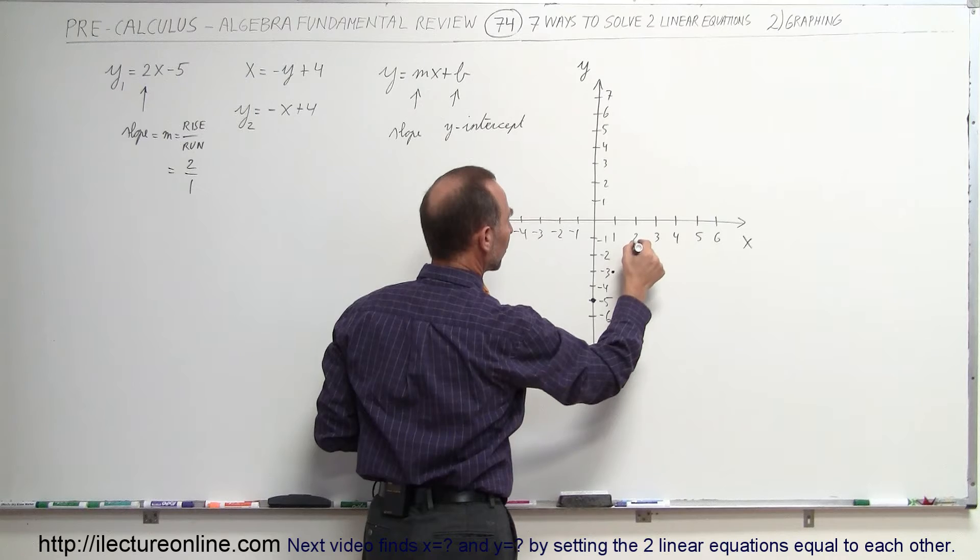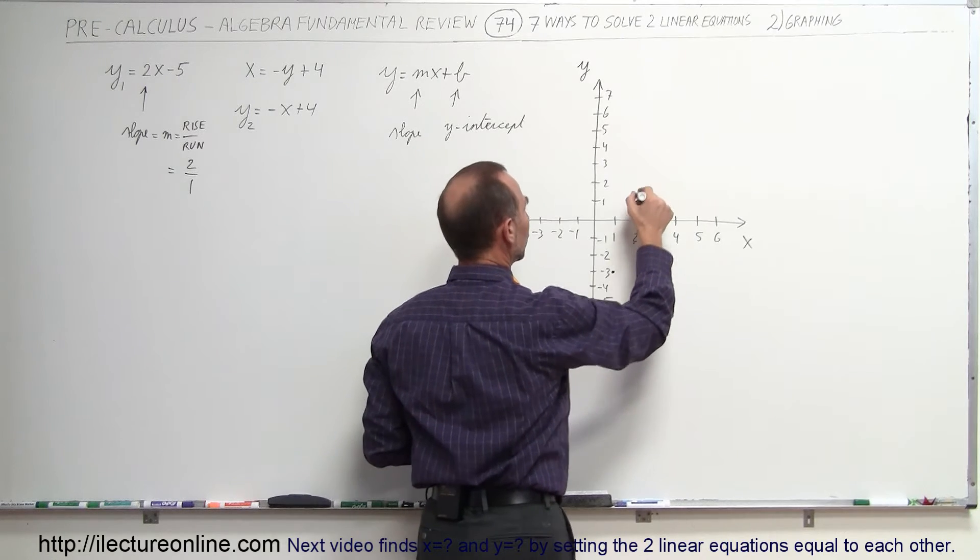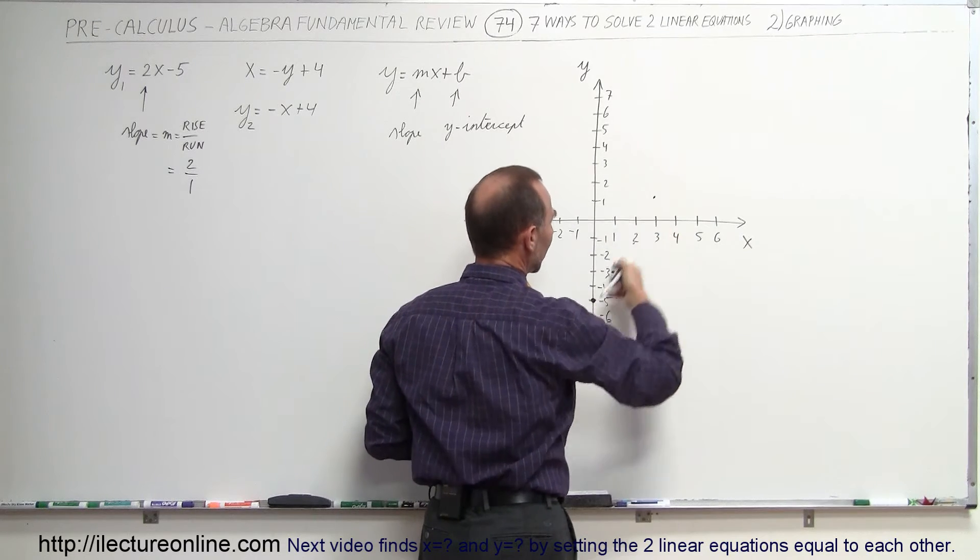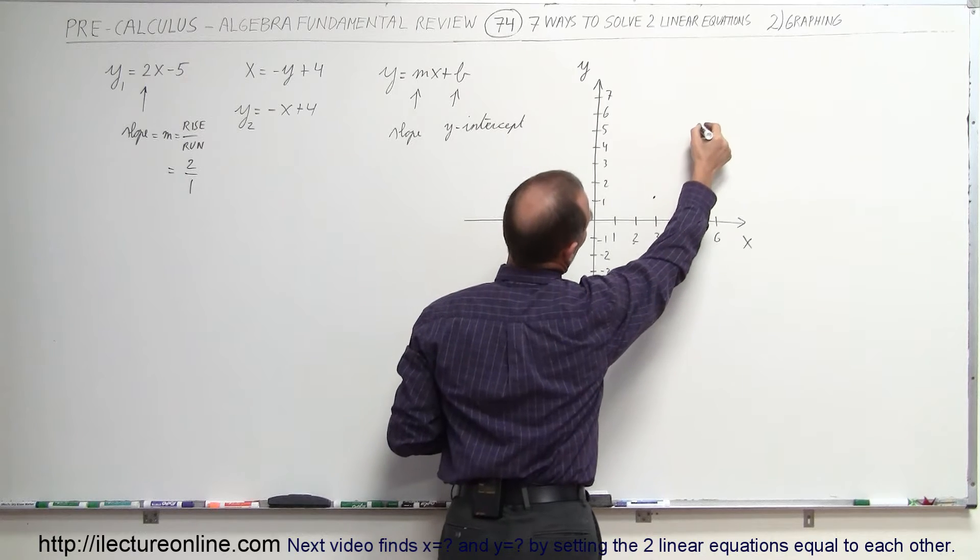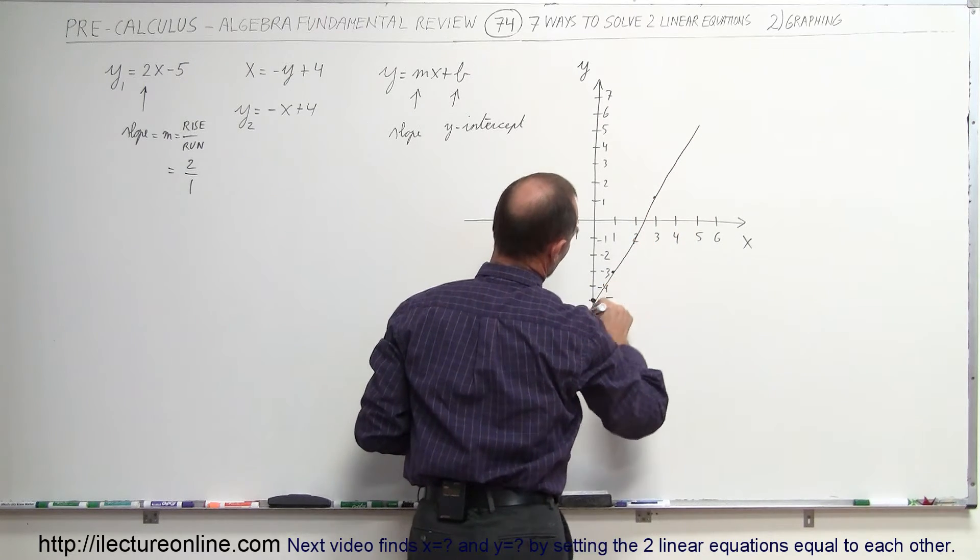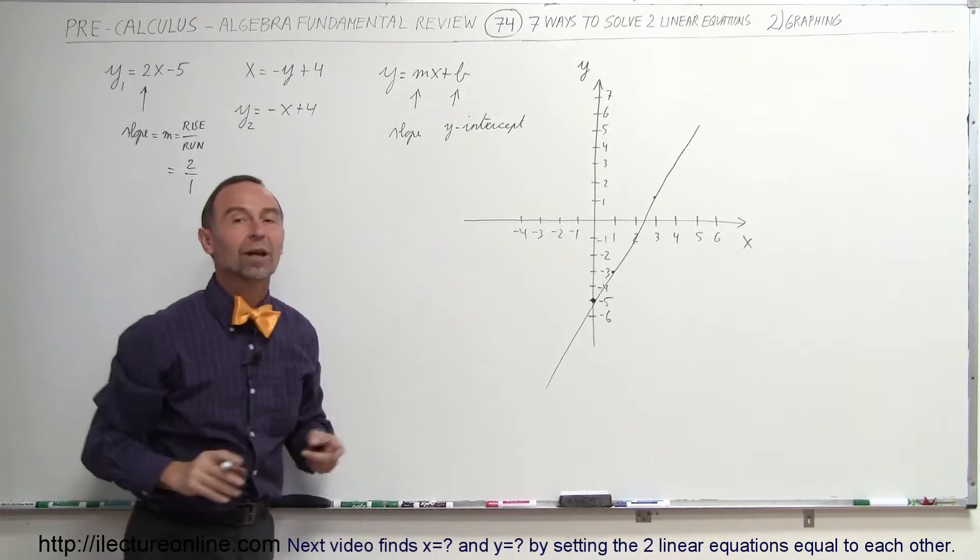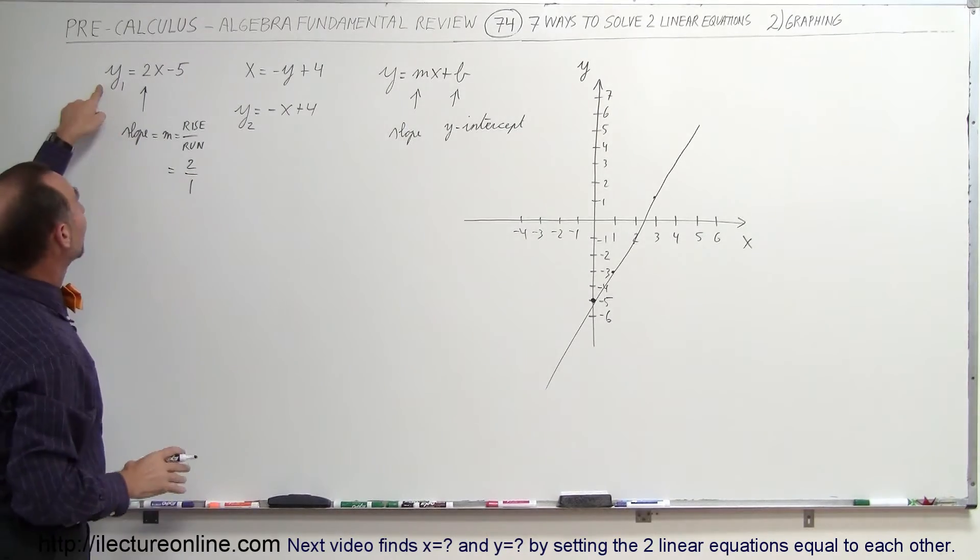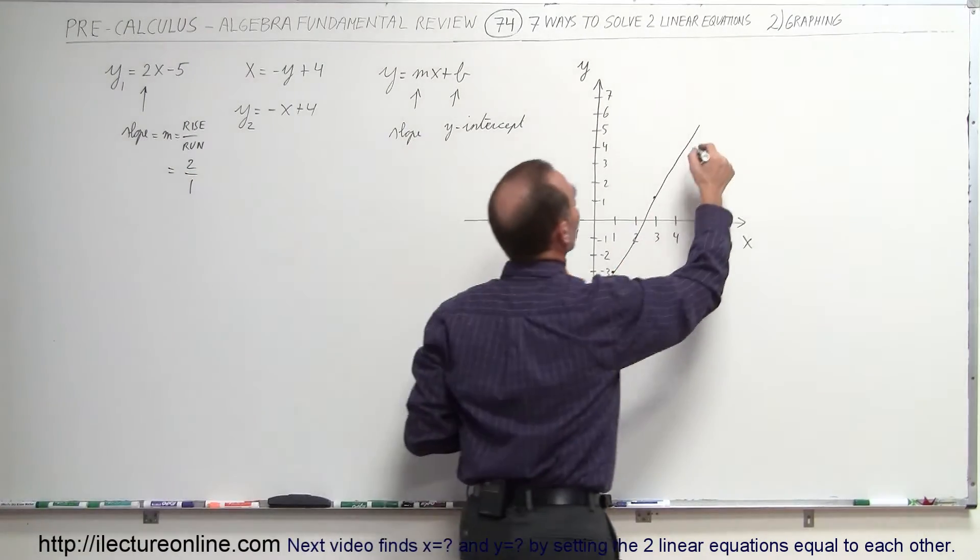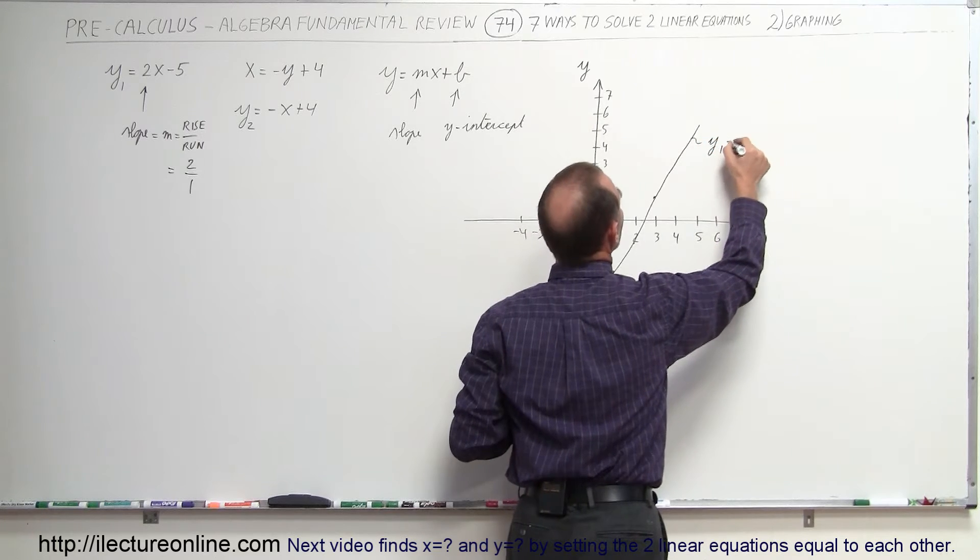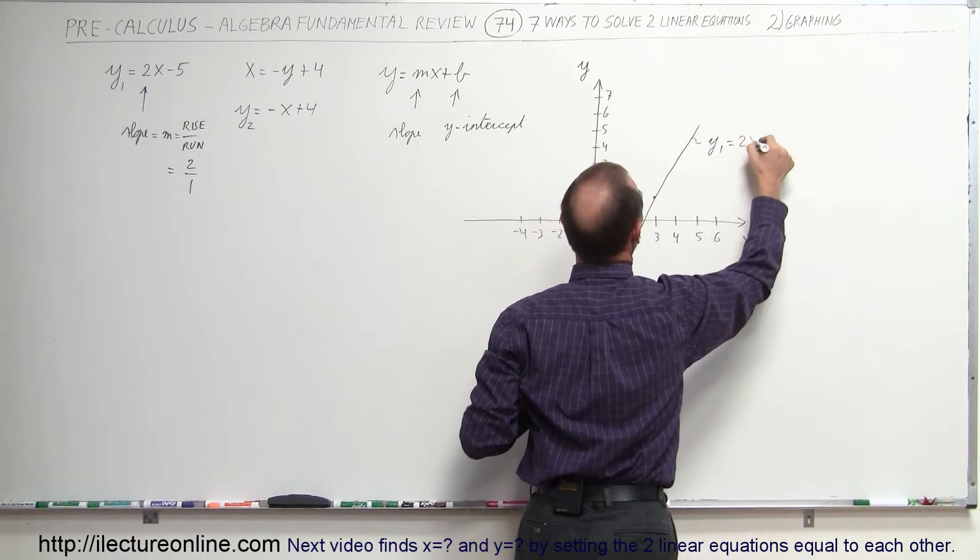There's one point. Up 2, over 1. There's another point. Up 2, over 1. Another point. You can see that those line up nicely. And when we connect those, like so, we have a straight line representing our first line. So we can call this the line y1 equals 2x minus 5.